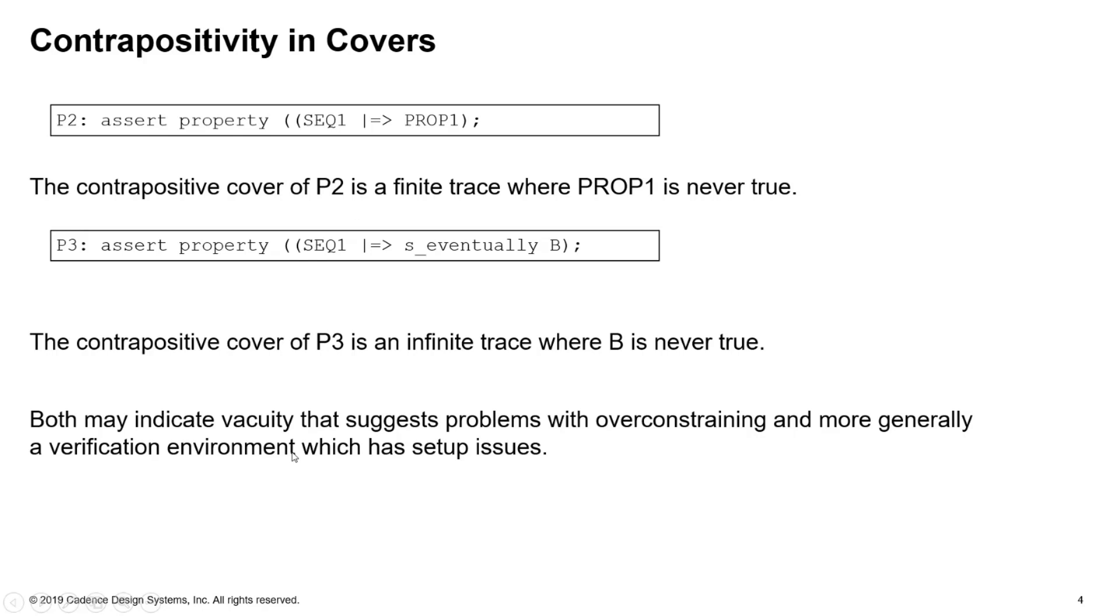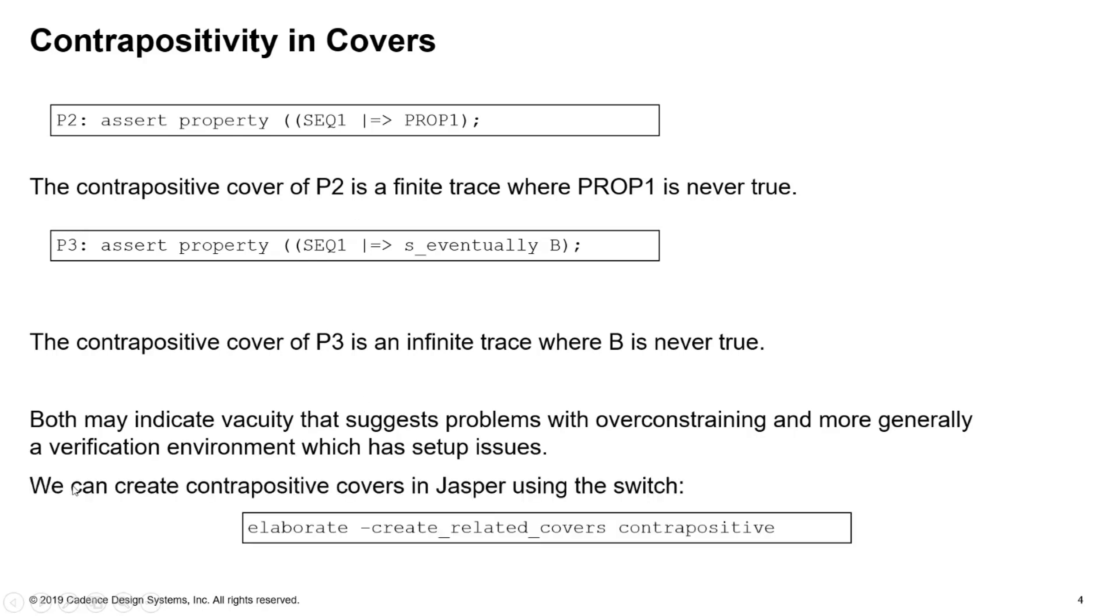We can create contrapositive covers in Jasper using an elaborate switch. We don't have to work out what they are for ourselves. So we use this create_related_covers switch to the elaborate command and put the value contrapositive there, and that will generate those covers for us automatically. So that's it with contrapositive as it relates to SVA.